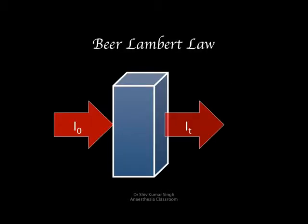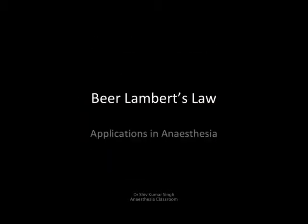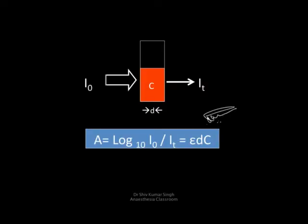I am going to talk about Beer-Lambert's law and its application in anesthesia. The intensity of light travelling through a known substance reduces proportionally to the concentration of the substance and the distance it travels through. So the absorption is equal to log 10 of the incident light over the transmitted light, and is equal to a constant called epsilon or the extinction coefficient, the distance or path it travels through, and the concentration of the substance.